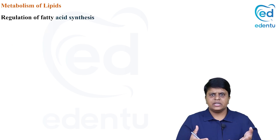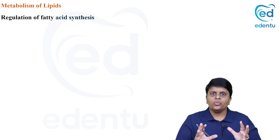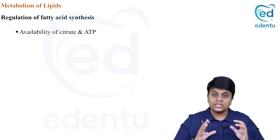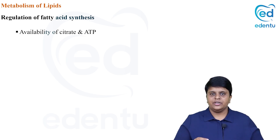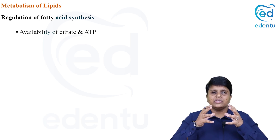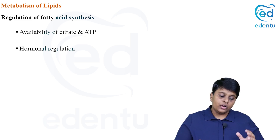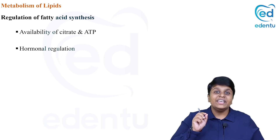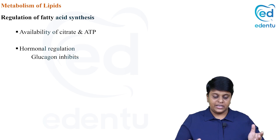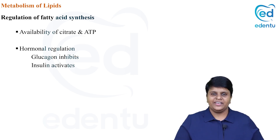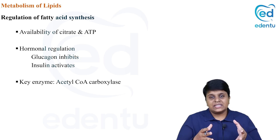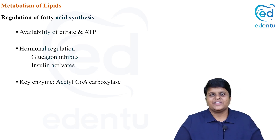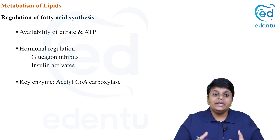Fatty acid synthesis is a highly energy-requiring process and must be regulated. Regulating factors include availability of citrate and ATP — when there is excess ATP, fatty acid synthesis occurs, and citrate is an indicator of the energy status of the cell. Hormonally, insulin, the anabolic hormone, activates fatty acid synthesis, while glucagon inhibits it. The key enzyme acetyl-CoA carboxylase is also regulated by covalent modification — it is active in its dephosphorylated state.